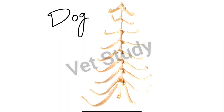Now let's talk about the pig. The number of sternibrae in the pig is six. The manubrium sternibrae is elongated and compressed from side to side. The other segments will be compressed from side to side as well, and the xiphoid process will be long.